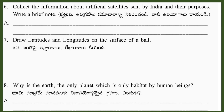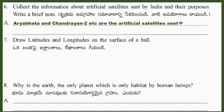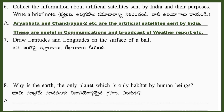Question 6: Collect the information about artificial satellites sent by India and their purposes. Write a brief note. Answer: Aryabhata and Chandrayaan-2 etc. are the artificial satellites sent by India. These are useful in communications and broadcast of weather reports, etc.